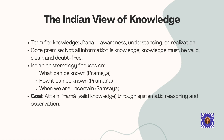Indian epistemology — that's the study of knowledge — focuses on three main questions: what can be known, called prameya; how it can be known, called pramana; and what happens when we are uncertain, called samsaya. The ultimate goal of this system is to reach valid knowledge through careful reasoning and observation. This approach is remarkably systematic and has parallels to modern scientific thinking.